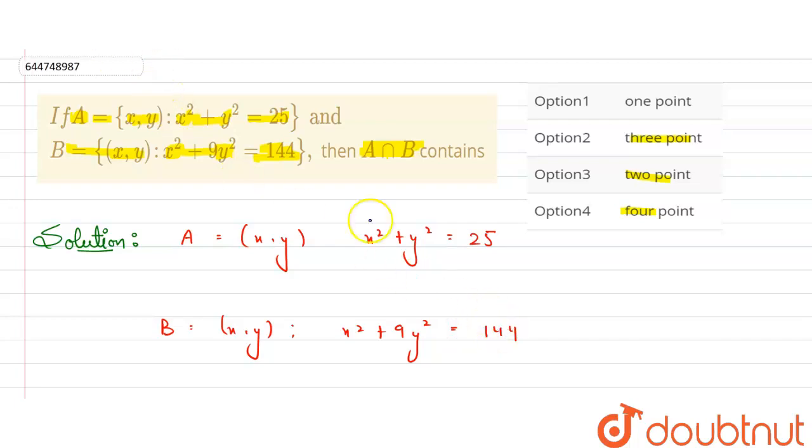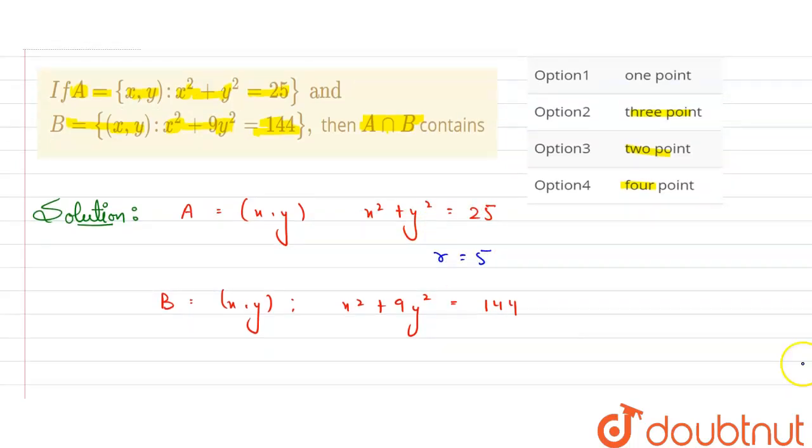So you can clearly see this is the equation of a circle with radius equal to 5. And here you can see x²+9y², so it represents an ellipse on the x-axis, and the radius will be 12 here.